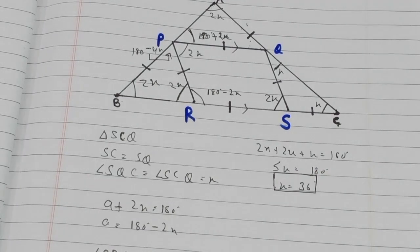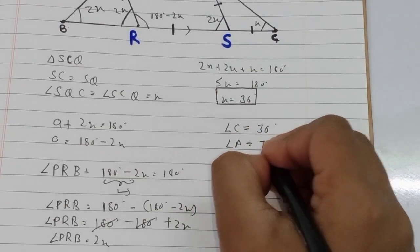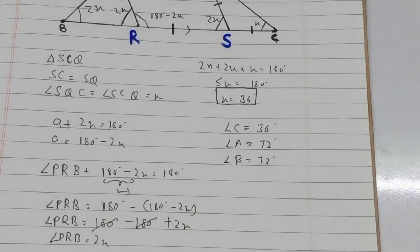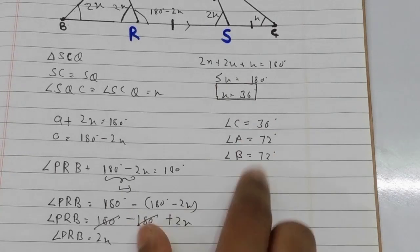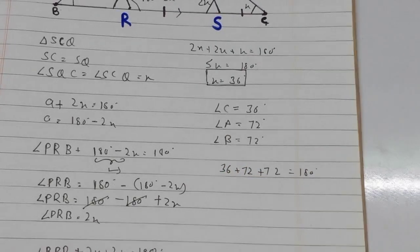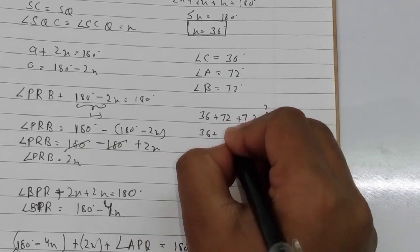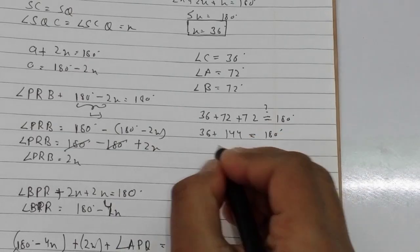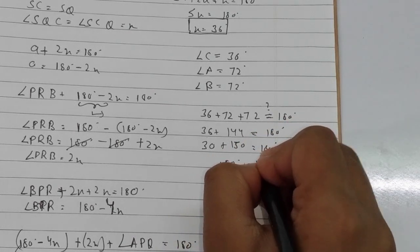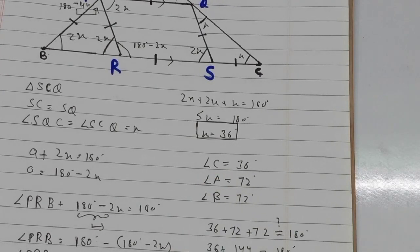So angle C equals x, which is 36 degrees. Angle A equals 2x, which is 72 degrees. Angle B equals 2x, which is 72 degrees. Let's verify: 36 plus 72 plus 72 equals 180 degrees — and indeed 180 equals 180, so our answer is correct.